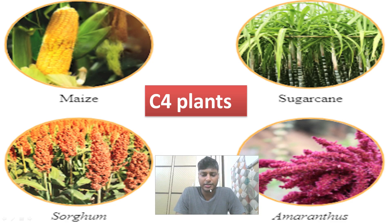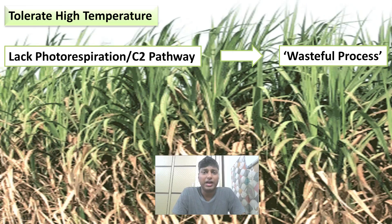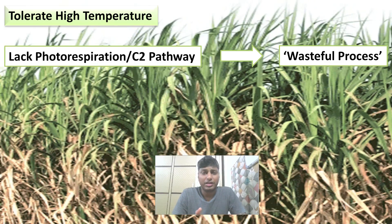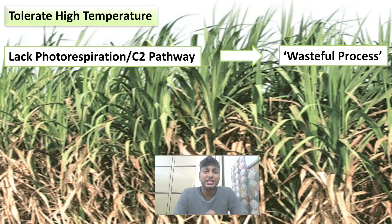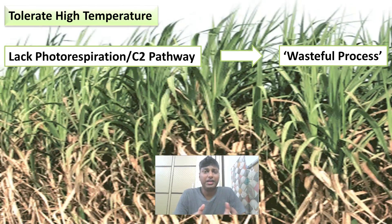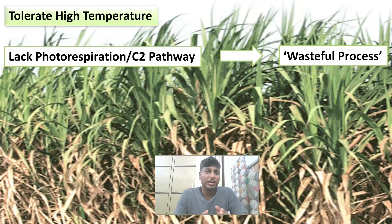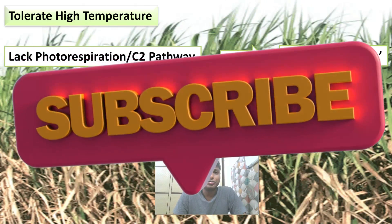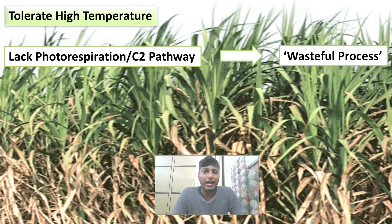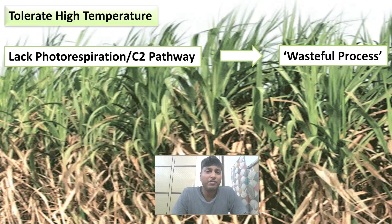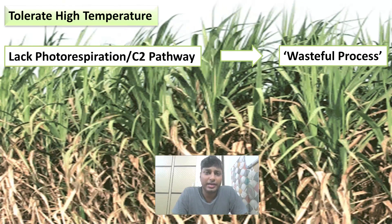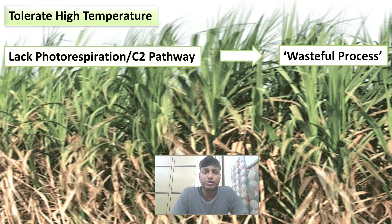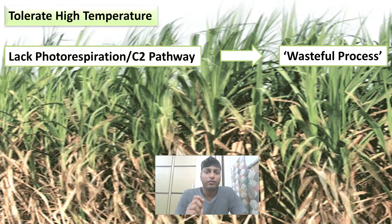What is the speciality of C4 plants? These plants can survive at very high temperatures, meaning they are tropical plants. They can perform photosynthesis at very high light intensities, making them much more evolved compared to C3 plants. A very important factor in C4 plants is that they do not perform photorespiration.